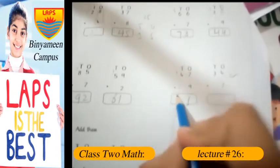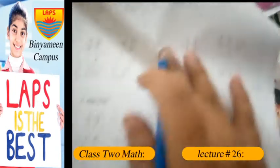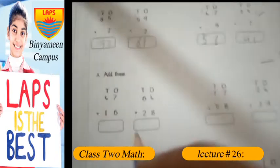7 and 9 makes 16. 1 carry here and it makes 56. 4 and 7 makes 11 and 41. 41 is the answer to this problem.